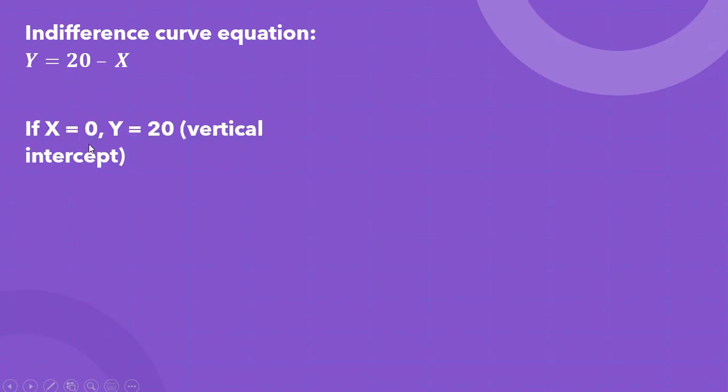And now let's get some points on the indifference curve. If x equals 0, plugging 0 in for x, y equals 20, and we have the vertical intercept of the indifference curve.